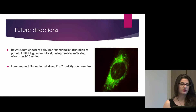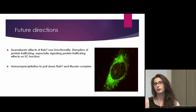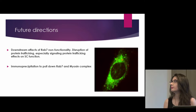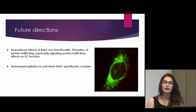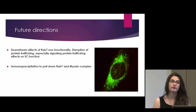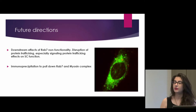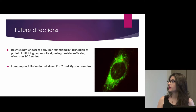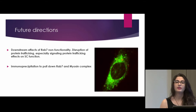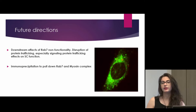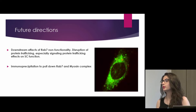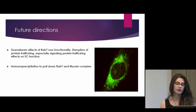For future directions, we want to look at the downstream effects of RAB7 non-functionality — specifically the disruption of protein trafficking of signal proteins, because that's usually what we find in a RAB7 endosome. One protein we looked at specifically was neuregulin: it's inside a RAB7 vesicle, and if there is improper RAB7 protein trafficking, the signal may not be stopped in time, prolonging it and potentially disrupting proper myelination. We also want to verify our co-localization findings through a biochemical analysis called co-immunoprecipitation, to pull down a RAB7 and myosin complex.